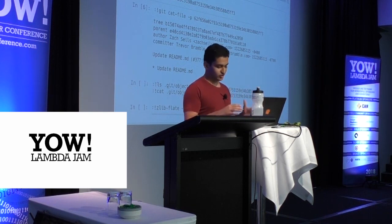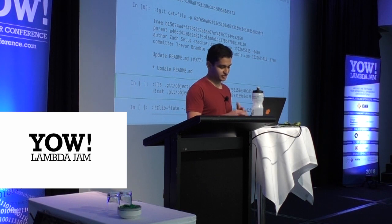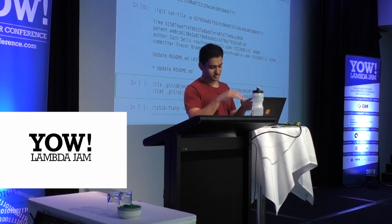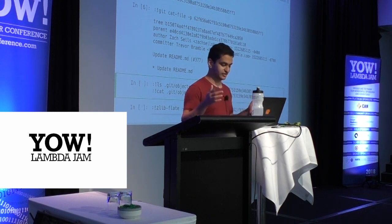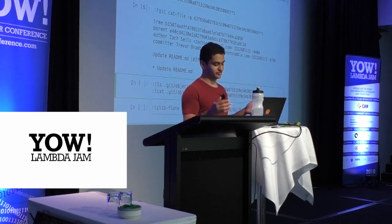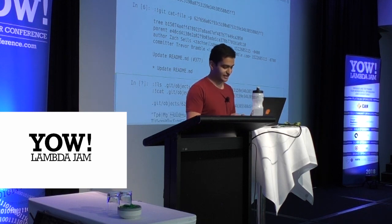Git stores all of its objects — each of its tiny files — inside the objects directory. The first two characters of the hash are the subdirectory underneath objects. The next 38 characters of the hash are the name of the file. I can list the file, confirm it exists, and cat the contents — but I get gibberish.